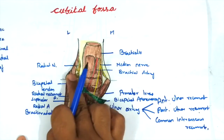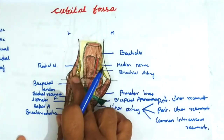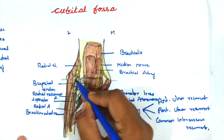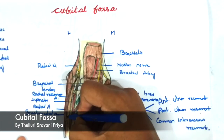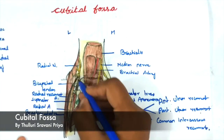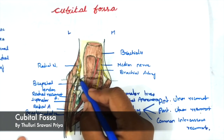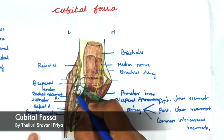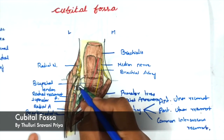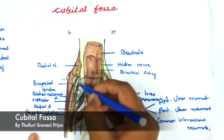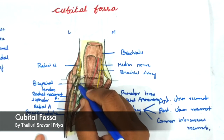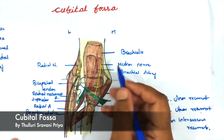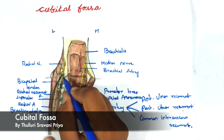At the superior lateral angle, the radial nerve descends in front of the lateral epicondylar ridge and splits into a superficial branch and a deep branch. The superficial branch continues as a cutaneous branch passing underneath the brachioradialis muscle. The deep branch passes between the superficial and deep strata of the supinator muscle, entering the extensor compartment. Before piercing the supinator, the radial nerve gives a branch to the extensor carpi radialis brevis muscle and to the supinator muscle.